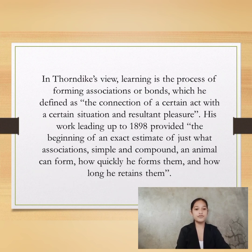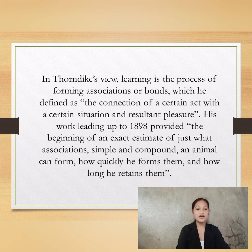In Thorndike's view, learning is the process of forming associations or bonds, which he defined as the connections of a certain act with a certain situation and resultant pleasure. His work leading up to 1898 provided the beginning of an exact estimate of just what associations, simple and compound, an animal can form, how quickly he forms them, and how long he retains them.